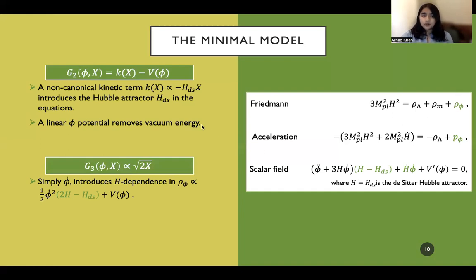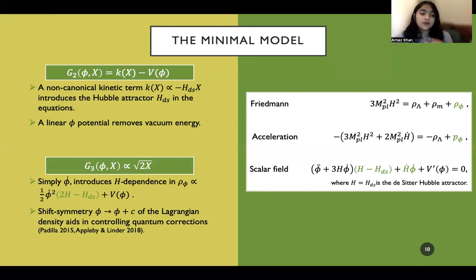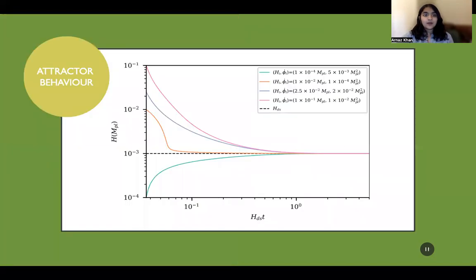So you've got three ingredients here. First is the linear potential that removes the vacuum energy density. The second is self-tuning because of the presence of h inside our Friedman equation and scalar field equation. And we've got the desitter attractor that is introduced through the kinetic term. The final ingredient is the shift symmetry of the Lagrangian, which is known to aid in controlling quantum corrections.